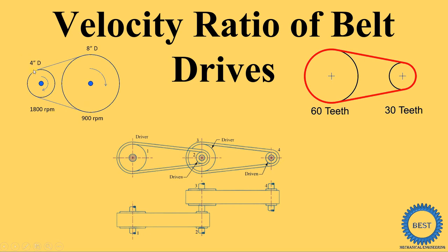In a simple belt drive, only a driving pulley and the driven pulley are there. In a compound belt drive, a number of pulleys are there. The driving pulley is rotated by using an electric motor, IC engines, or any other type of prime mover. The driven pulley is rotated or driven by using the driving pulley.